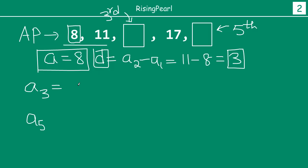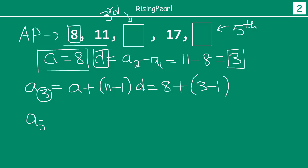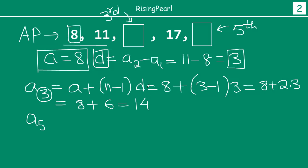For A3, using the formula A plus (N minus 1) times D: A equals 8, N equals 3, D equals 3. So we get 8 plus (3 minus 1) times 3 equals 8 plus 2 times 3 equals 8 plus 6, which equals 14. So the third term is 14.